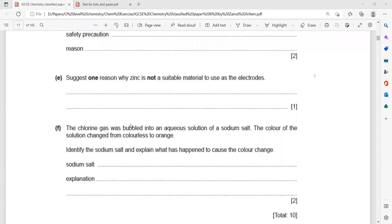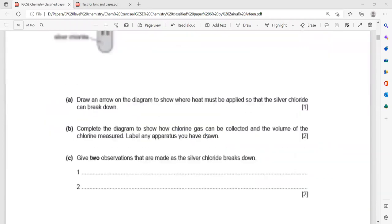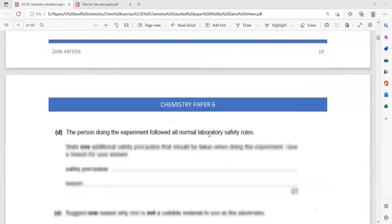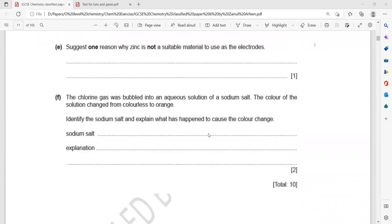Suggest one reason why zinc is not a suitable material to use as the electrode. Why do we use inert electrodes? Why not zinc? Zinc is not inert, it's an active electrode or it reacts. You can mention any as an answer: zinc reacts with chlorine, or it's reactive. Any answer is acceptable. It's a reactive metal, that's why we don't use it.